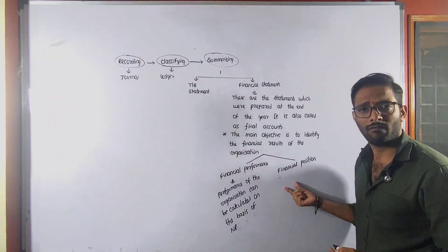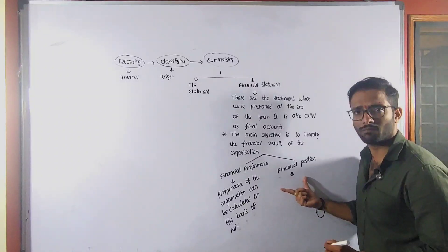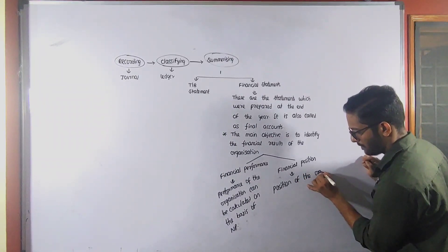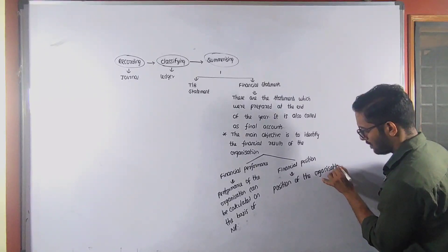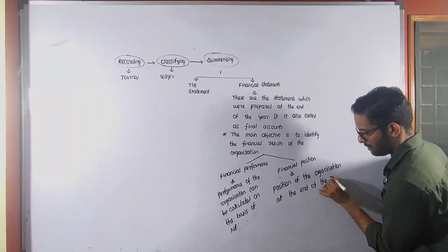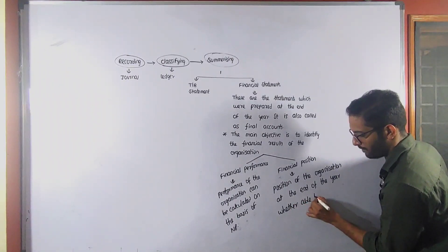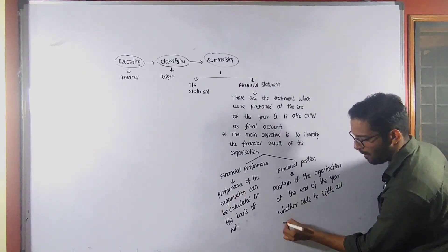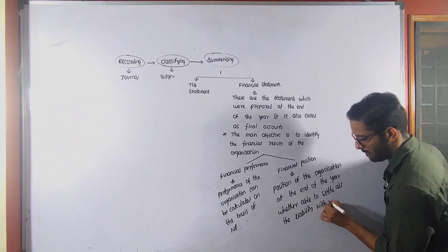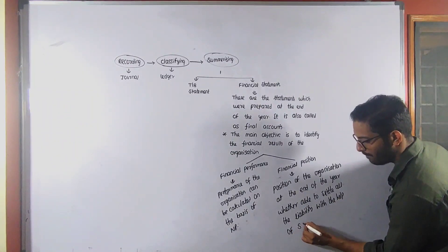The next and very important one is financial position. Financial position means the position of the organization at the end of the year — whether it is able to settle all the liabilities with the help of the sale price of assets.